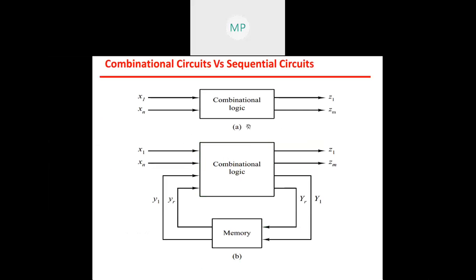This is a simple block diagram for a combinational logic circuit. It has inputs and outputs, and the output depends only on the present input. In a sequential logic circuit block diagram, a memory element is present along with combinational logic, so the output depends on the present input as well as the previous output stored in memory.